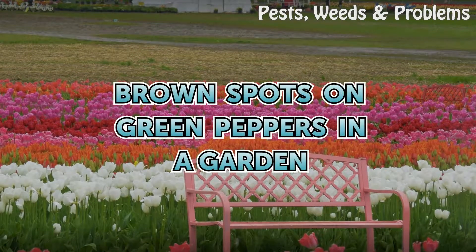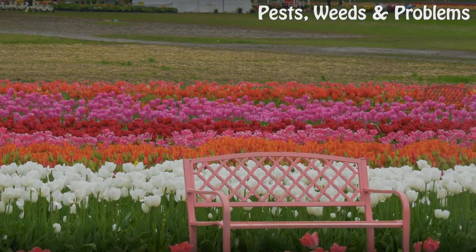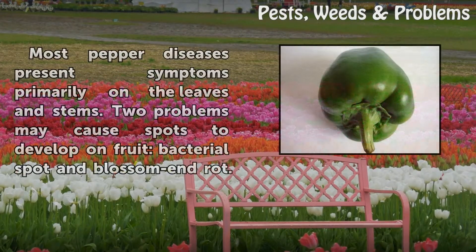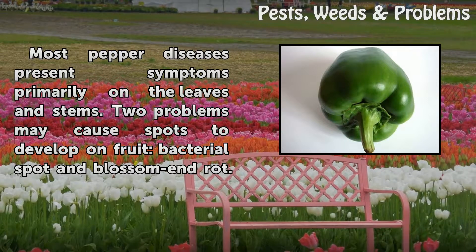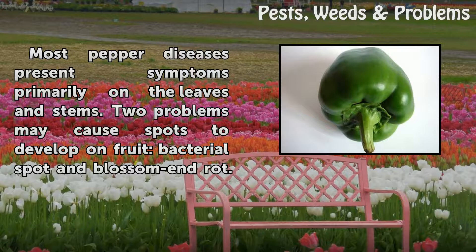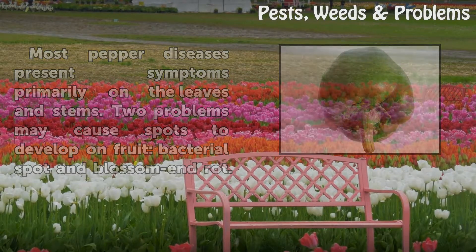Brown spots on green peppers in a garden. Most pepper diseases present symptoms primarily on the leaves and stems, but two problems may cause spots to develop on fruit: bacterial spot and blossom end rot.